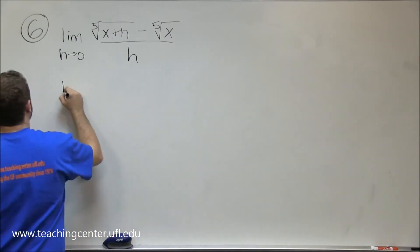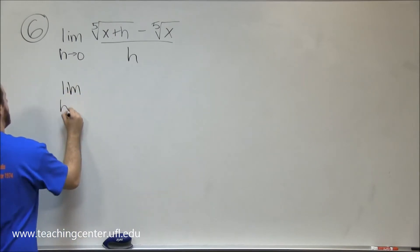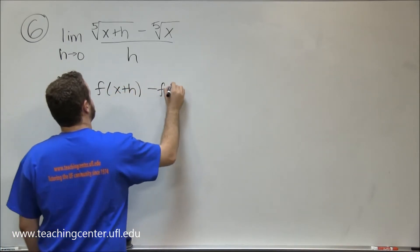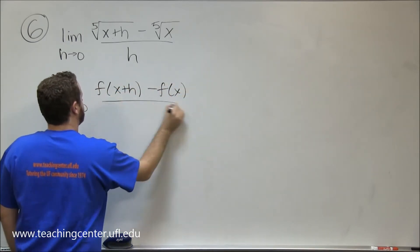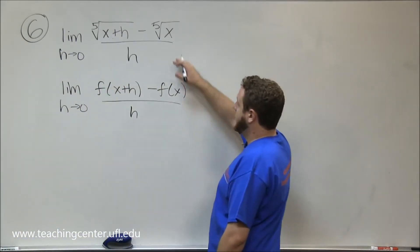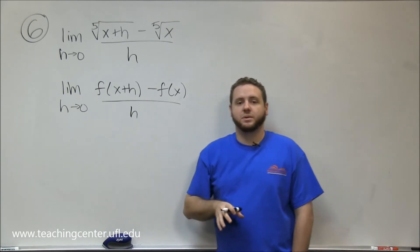Remember that that formula is the following. We always take the limit as h approaches 0 of f of x plus h minus f of x all over h. So you can see this problem that we were given lines up exactly with this formula.